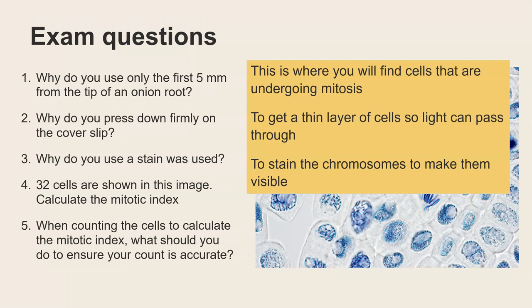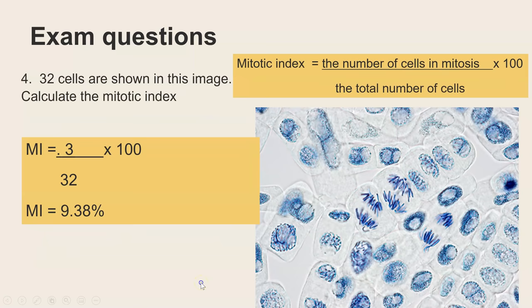So the first three then why do we use only the first five millimeters that is because that is the region where you'll find cells are undergoing mitosis and that's what we want to view under the microscope we press down to make sure you get a thin layer of cells so that light can pass through and the key thing is that light can pass through that would need to be said to get the mark you can't just say so you get a thin layer of cells why do we use a stain that is to stain the chromosomes to make sure they are visible.